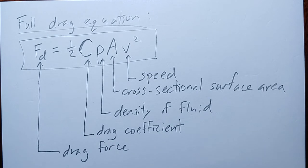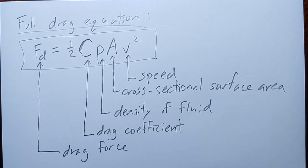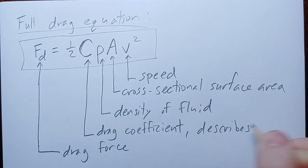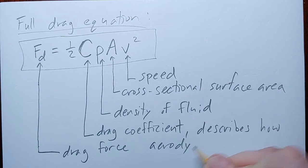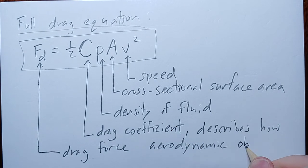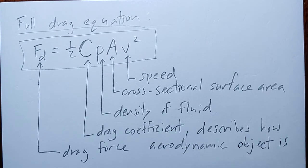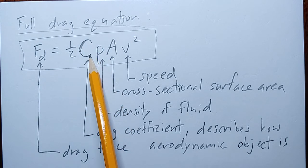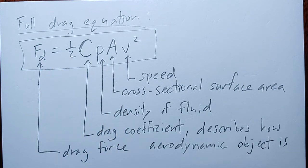C is called the drag coefficient. It's a number that describes how aerodynamic something is. The lower the drag coefficient, the lower the drag force is going to be. So a more aerodynamic object has a lower drag coefficient, and a less aerodynamic object has a larger drag coefficient.